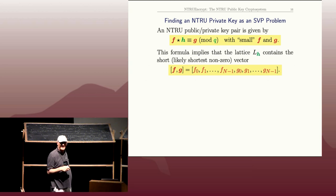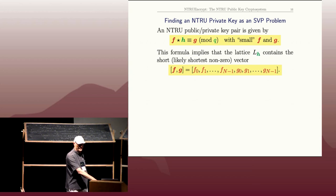Remember, Eve knows L_h—h is the public key, she can create that lattice because it just depends on h. So Eve knows a lattice that contains this very short vector, so she breaks the system by solving the shortest vector problem if she can do that.